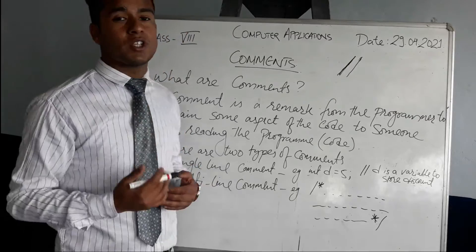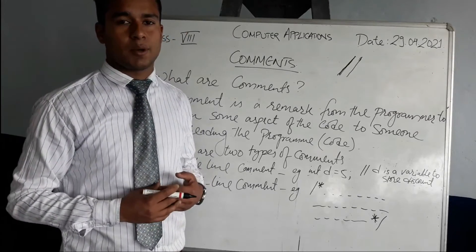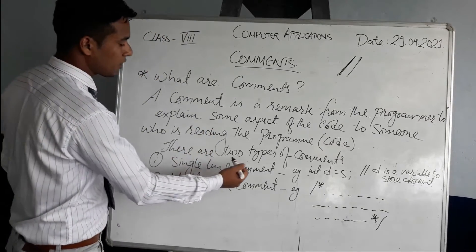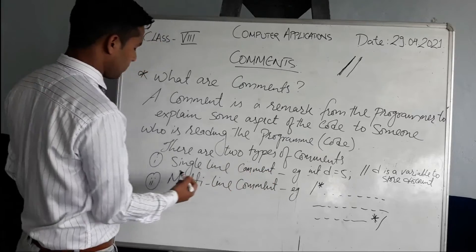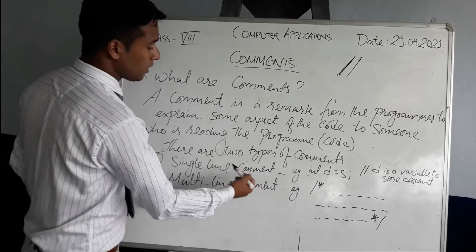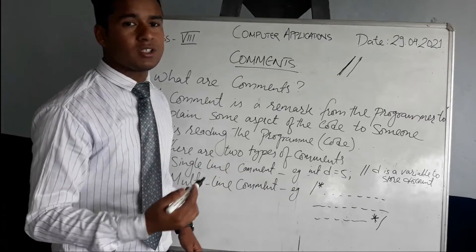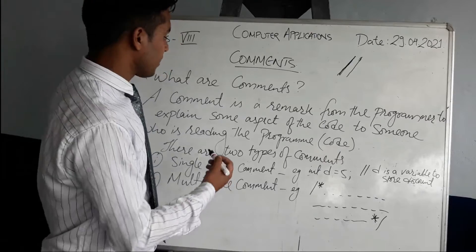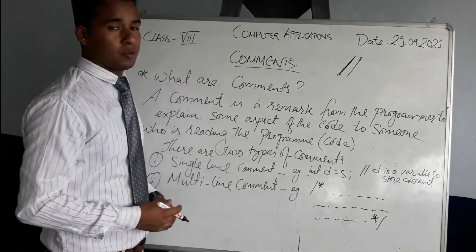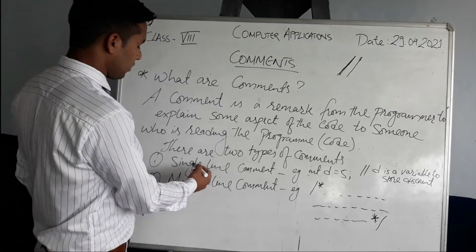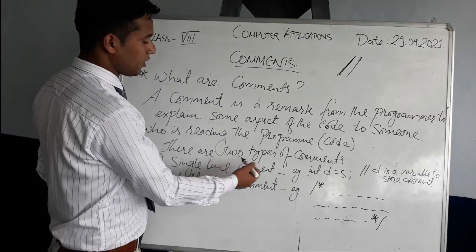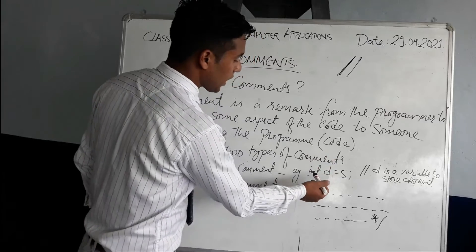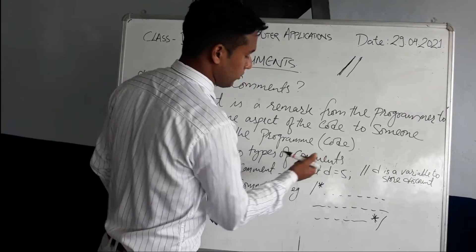There are two different types of comments in Java programming. The first one is called a single-line comment and the second one is called a multi-line comment. These are the two different types of comments we'll be learning here in Java programming. For a single-line comment, just for example: int d = 5.